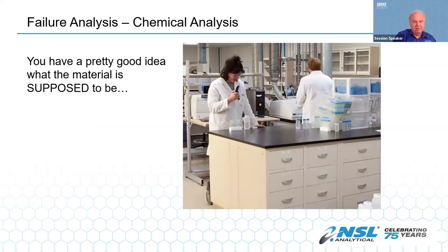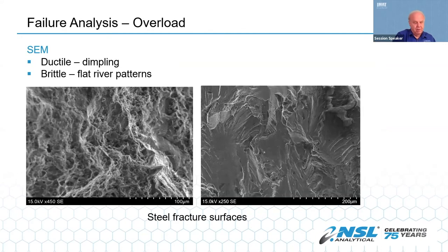Chemical analysis is important because it gives the analyst a baseline to work from. You may know what the material is supposed to be, but you can make a lot of assumptions based on chemistry and you might be wrong. These are SEM images of typical ductile dimpling in a ductile fracture on the left, and the flat river patterns typical of a brittle transgranular fracture on the right. If a part fails, most of the time you want it to fail in a ductile manner, so it gives some warning by bending or stretching before it fails. There are two general types of brittle fractures: transgranular across the grains, or intergranular at grain boundaries.